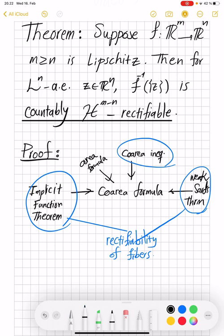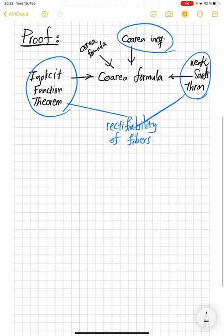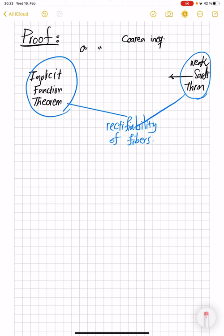Part of the difficulty of the Co-Area formula was just the linear algebra behind this Co-Area factor. Okay, so how does the proof of this rectifiability here happen?